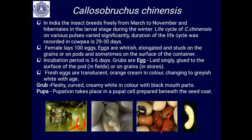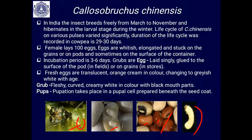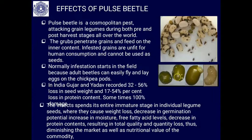From the egg, a grub — the larval stage — comes out. The eggs are laid singly and are glued onto the seed coat, pod, or grains in the storehouse. Fresh eggs are translucent and orange-cream in color, later changing to grayish. The grub is fleshy and creamy colored, with a boring mouthpart that bores into the grain or pulse. Pupation takes place in a pupal cell beneath the seed coat — it is the larva that causes all the damage, not the adult.